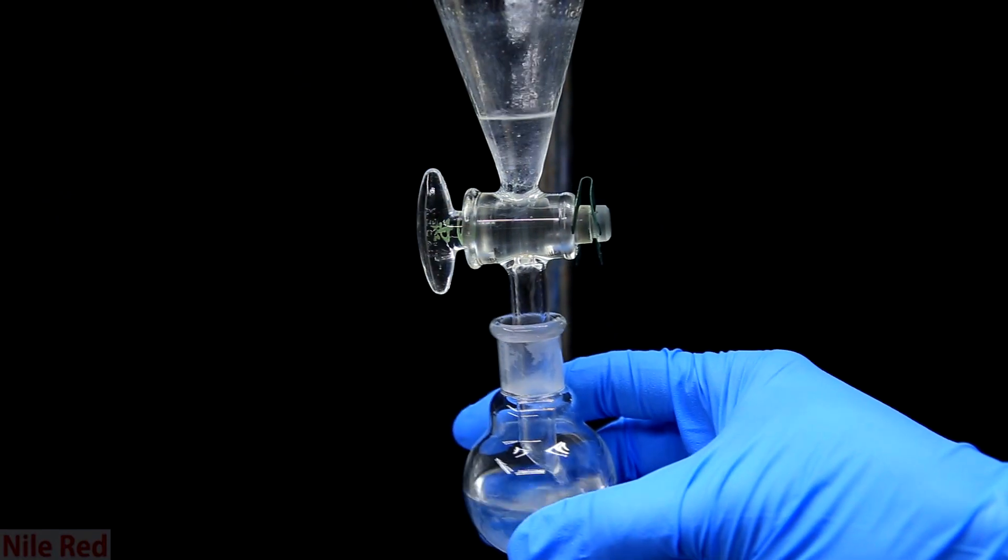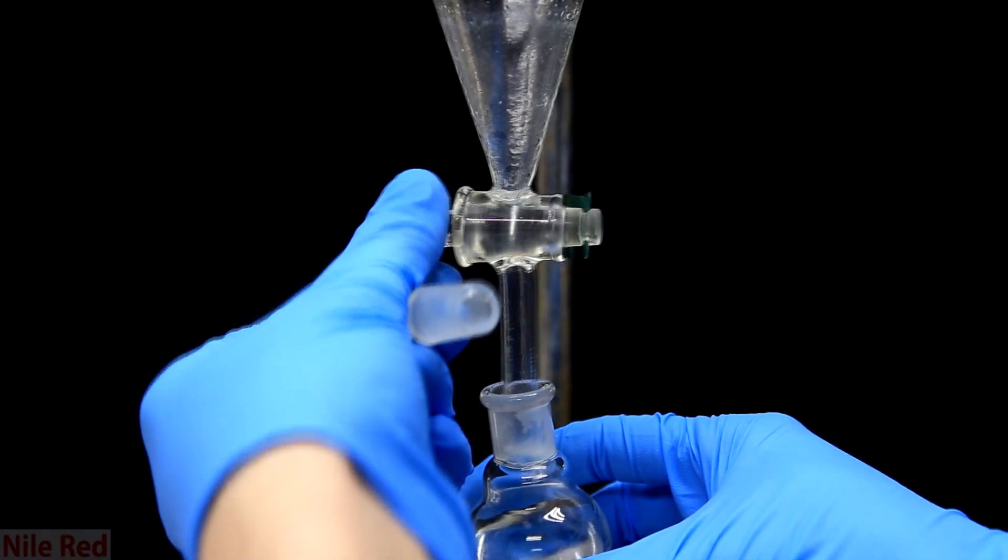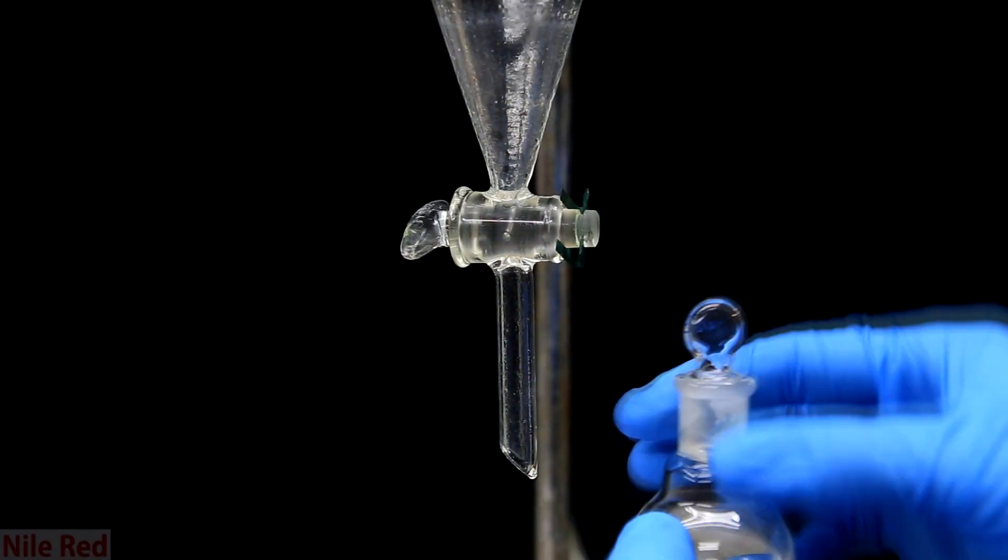So after doing this three times we're left with a flask containing about 15 milliliters of diethyl ether with our product dissolved in it.